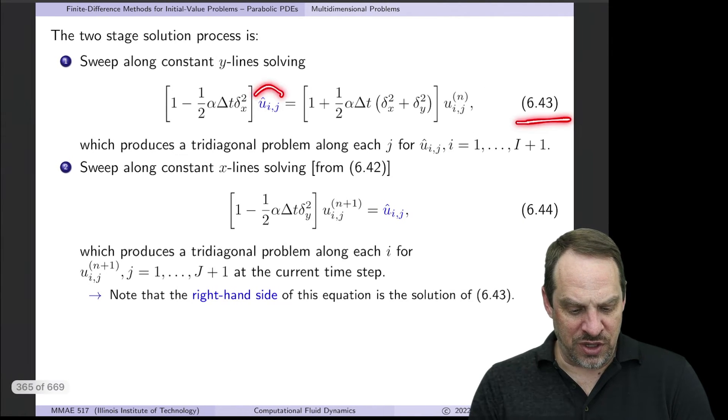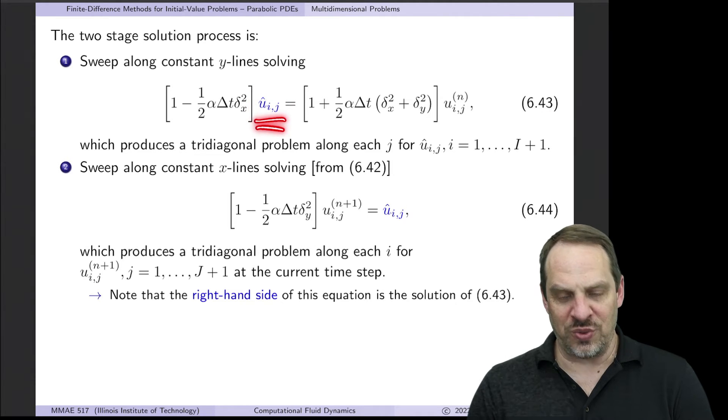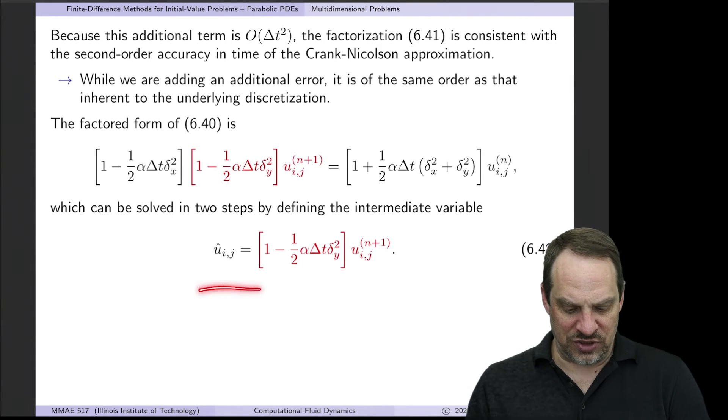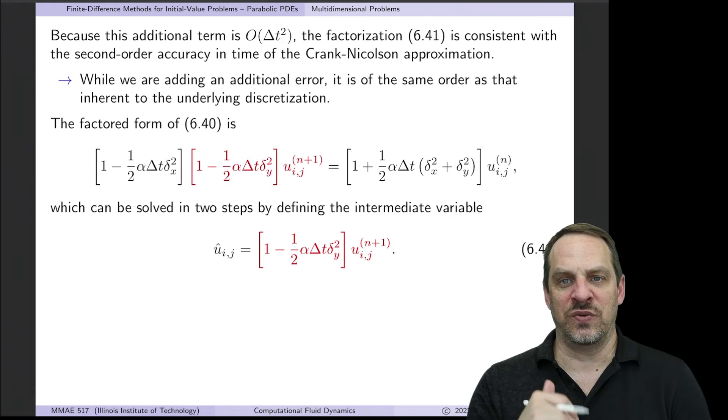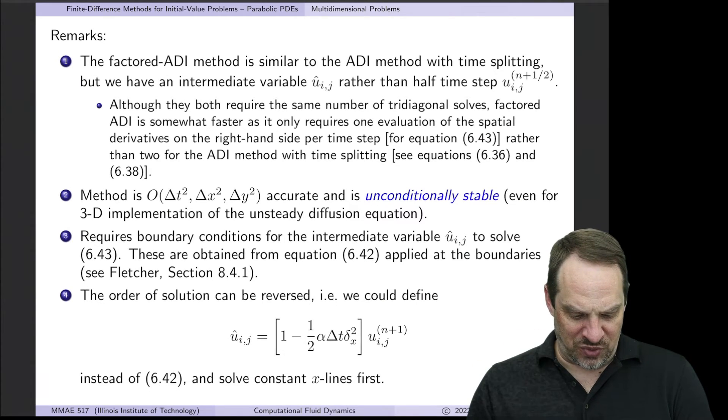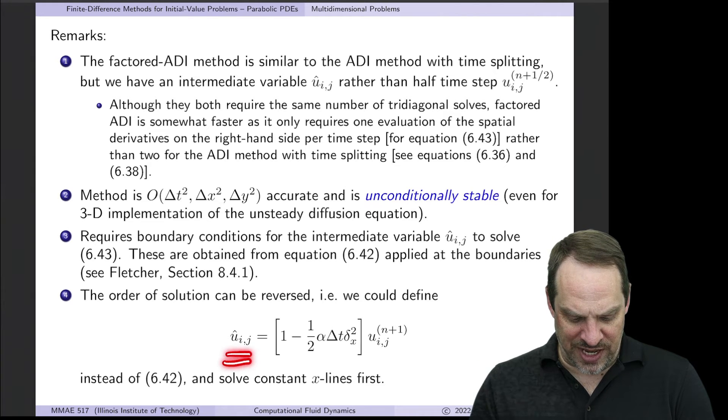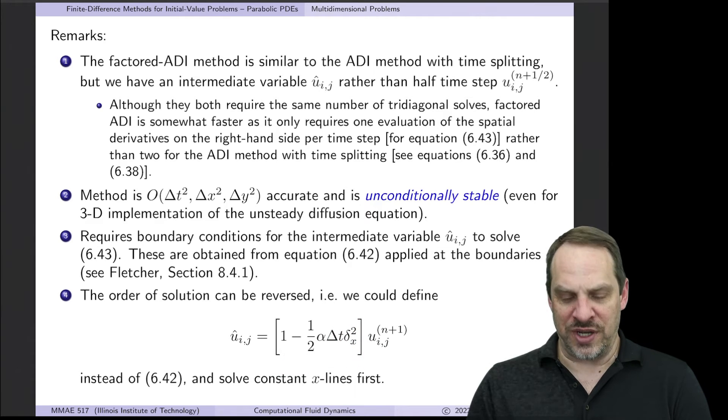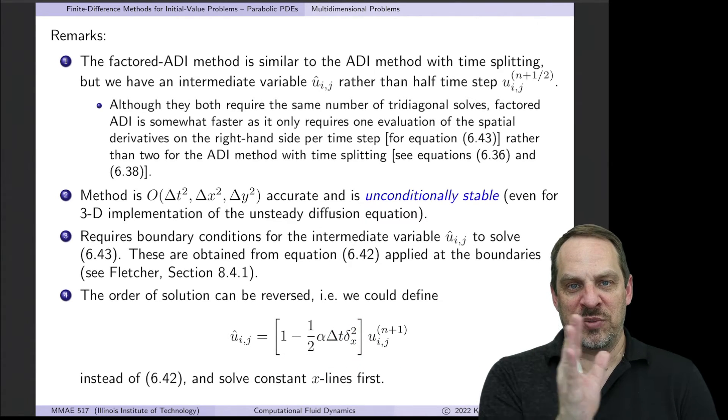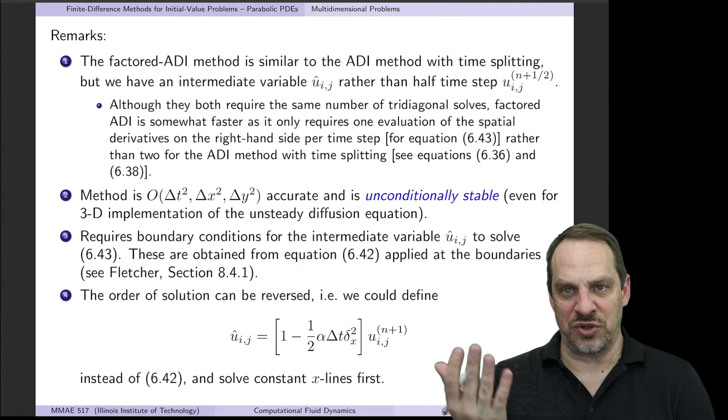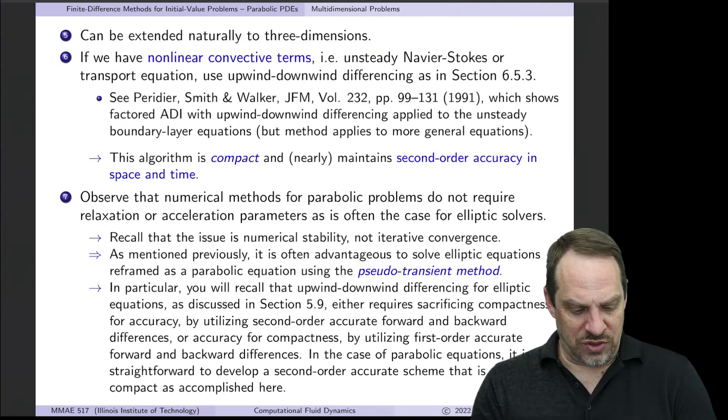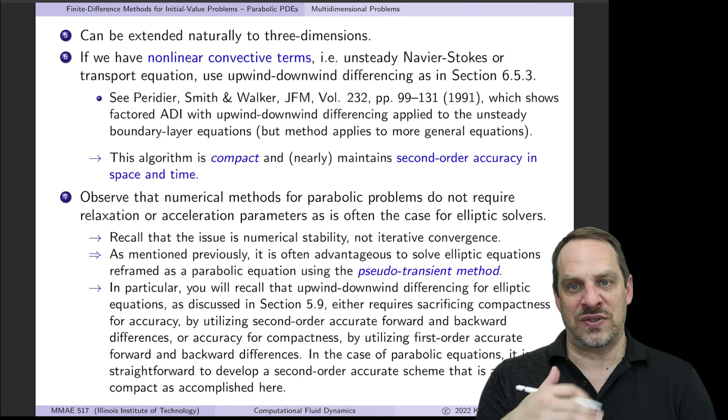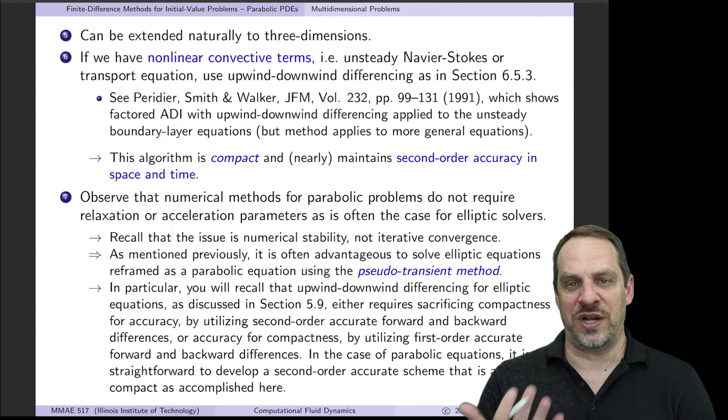Now to solve 643, we would need boundary conditions for u_ij hat. So we'd have to develop those from the boundary conditions for u, and then using these relationships to determine what those boundary conditions would correspond to for u hat. Now of course we could flip this around. There's nothing sacred about my choice of u_ij hat. I could have equally well defined it as the x operator operating on u_ij at n plus 1. And that would have just flipped the constant x lines and constant y lines. There's no problem with extending this to three dimensions. Still second order accurate in time. We would then have three sets of tridiagonal solves as what would be the case for the fractional step method.